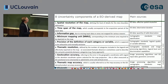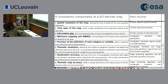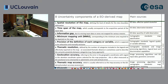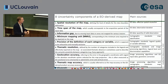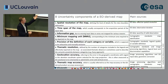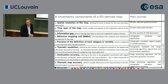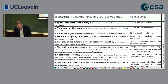The fifth component is the precision of the definition of each category of variables. The sixth is thematic resolution. The seventh is geolocation accuracy, which is very important. And the eighth is thematic accuracy—what we are used to calling overall accuracy and so on.